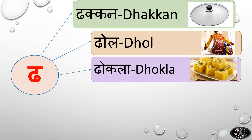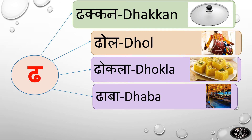Dha say Dhogla. Dhogla is a Gujarati dish. Dha say Dhabha. Dhabha means roadside restaurant.